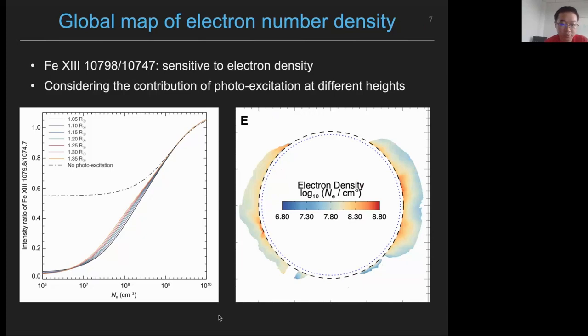Now that we have already got the phase speed, we need to calculate the electron density. This is done based on the ratio of these two Fe XIII lines. Their line ratio is sensitive to electron density. And we use the CHIANTI database to calculate the theoretical relationship between the line ratio and the electron density considering both collisional excitation and photo-excitation. The theoretical curves are shown in the left. And using this curve and combining the observation with CoMP, we can get the electron density in the entire field of view. The right figure is the derived electron density map.